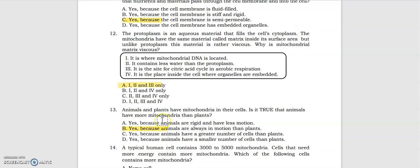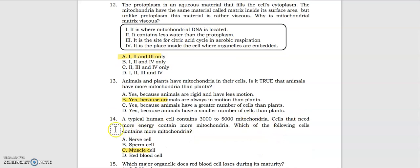Number thirteen: Animals and plants have mitochondria in their cells. Is it true that animals have more mitochondria than plants? The answer is yes, because animals are always in motion than plants. Number fourteen: A typical human cell contains three thousand to five thousand mitochondria. Cells that need more energy contain more mitochondria. Which of the following cells contains more mitochondria? It's letter C, muscle cell.